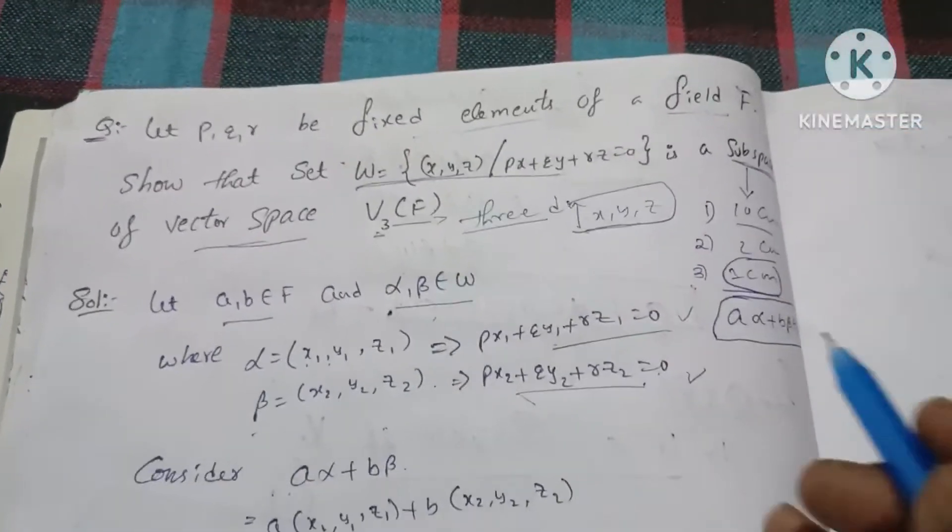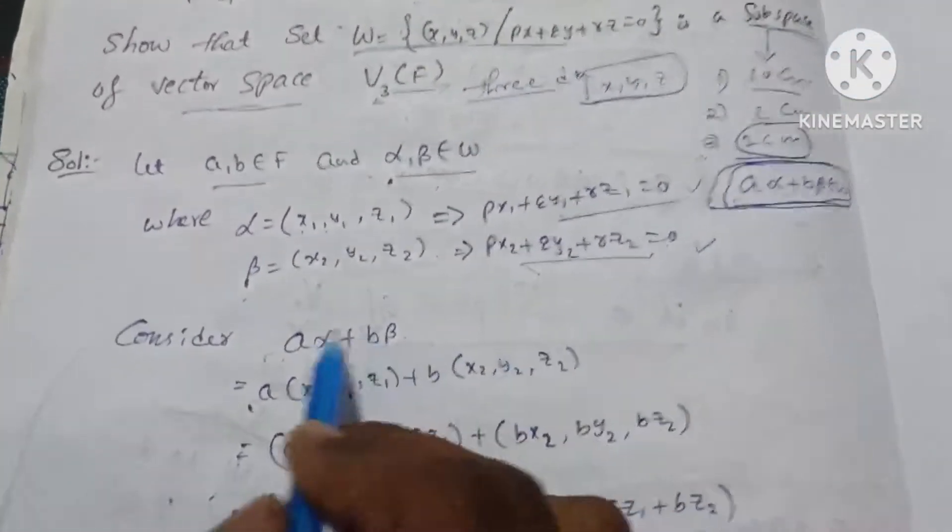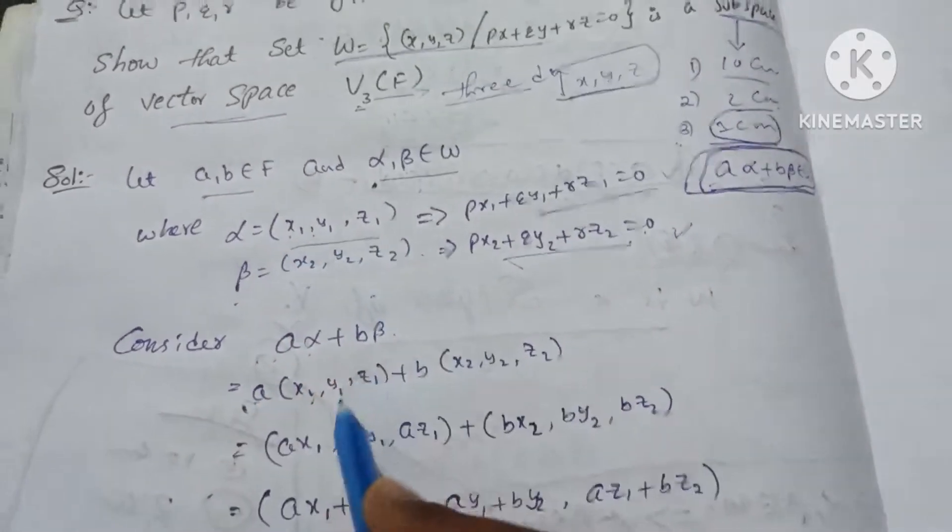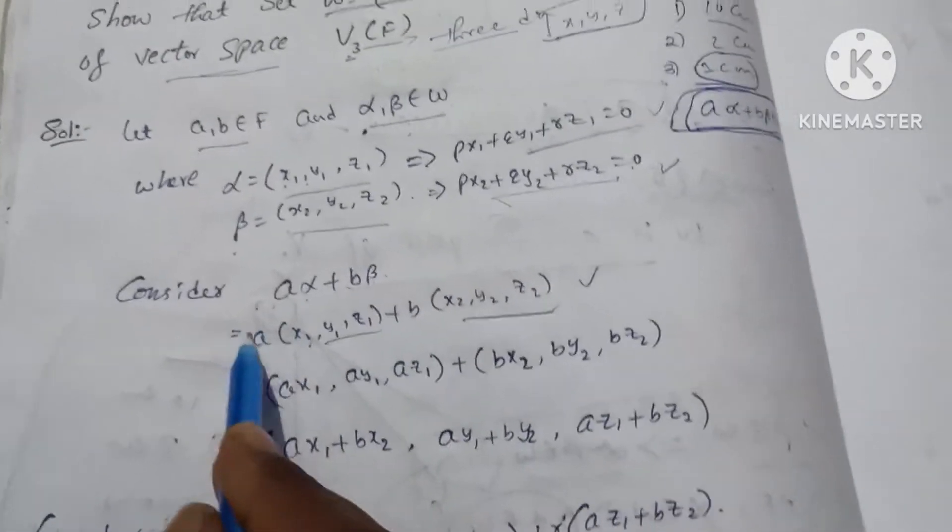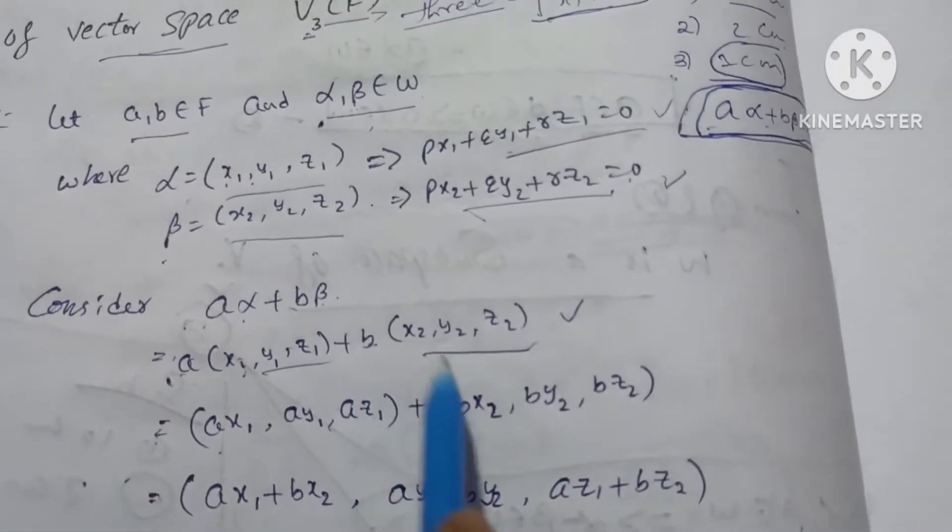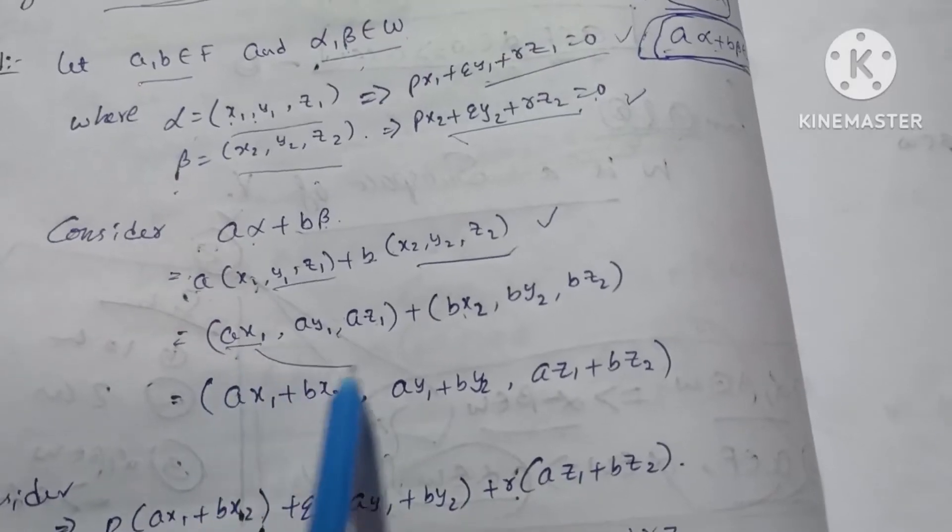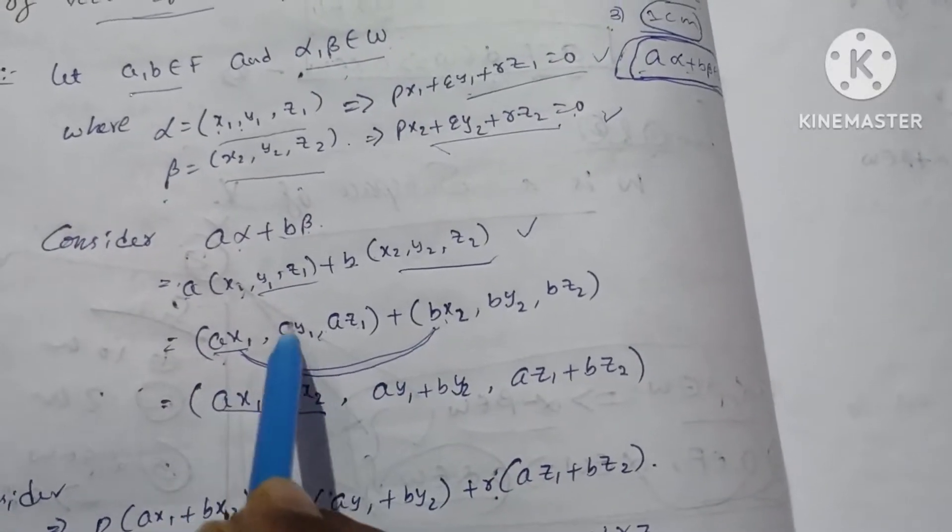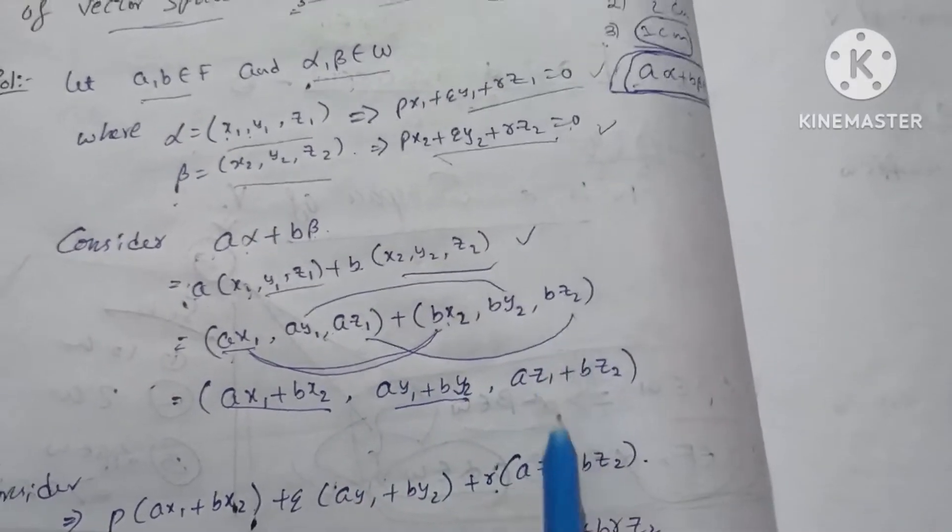Consider last condition a alpha plus b beta. So a into alpha (x1, y1, z1) plus b into beta (x2, y2, z2), that is a into x1, a into y1, a into z1 multiplied, next b into x2, b into y2, b into z2. So ax1 plus bx2, ay1 plus by2, az1 plus bz2.